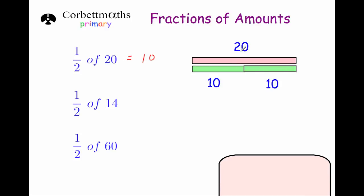You can find a half just by dividing by 2. So if I wanted to work out a half of 14, well 14 divided by 2 is 7 — just sharing it equally between 2. And a half of 60 is 30, because if we do 60 divided by 2, we get 30.